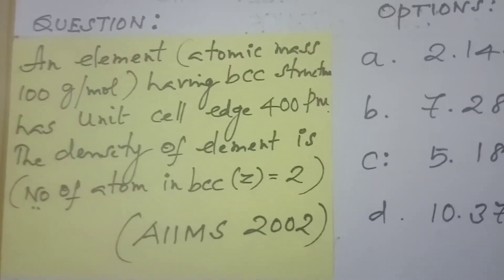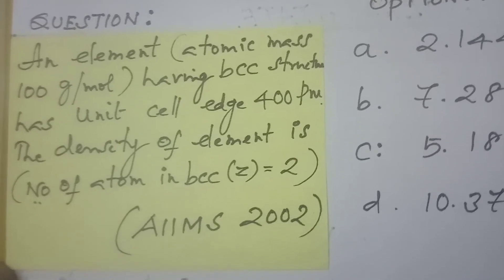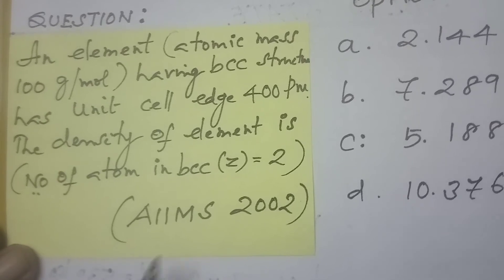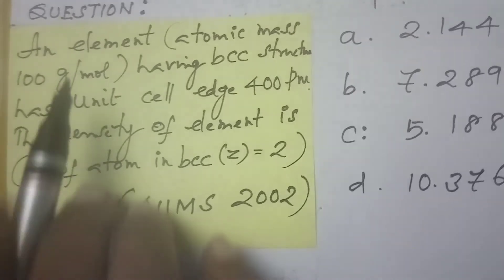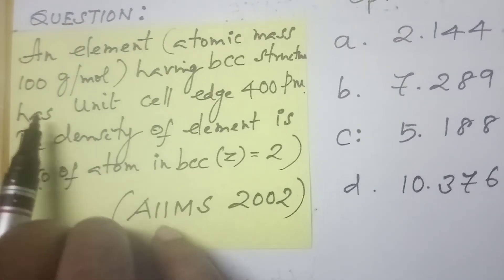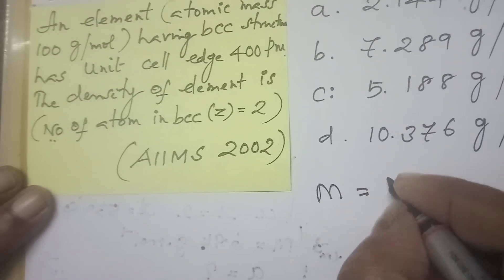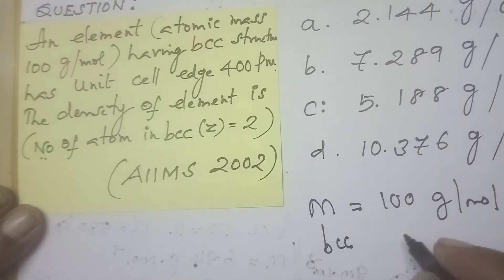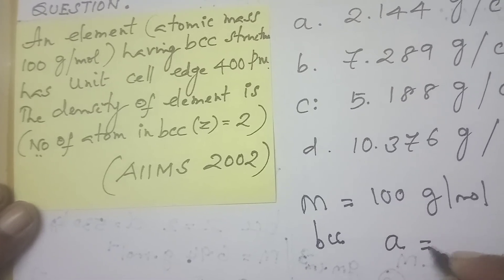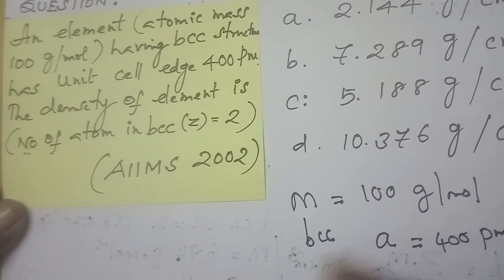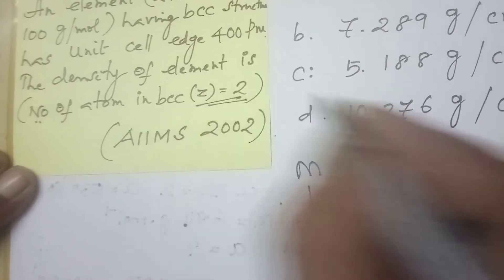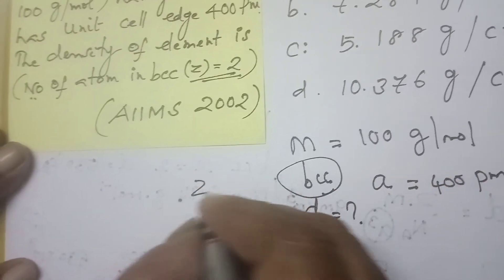Now let us see the next question — same pattern, but from AIIMS 2002. An element with atomic mass M = 100 gram per mole has BCC structure. The edge length A = 400 picometer. Find the density. Z = 2 for BCC automatically.